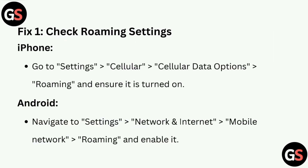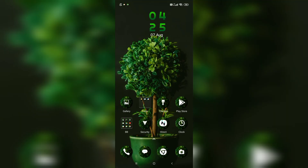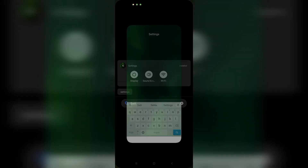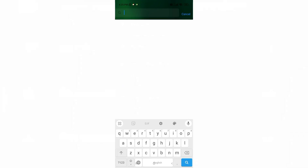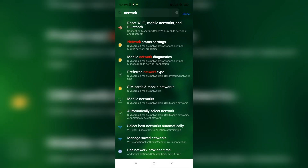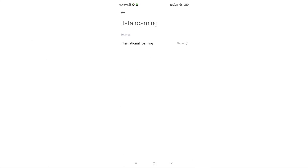Fix 1: Check roaming settings. For iPhone, go to Settings, then Cellular, then Cellular Data Options, then Roaming, and ensure it is turned on. For Android, navigate to Settings, then Network and Internet, then Mobile Network, then Roaming, and enable it.